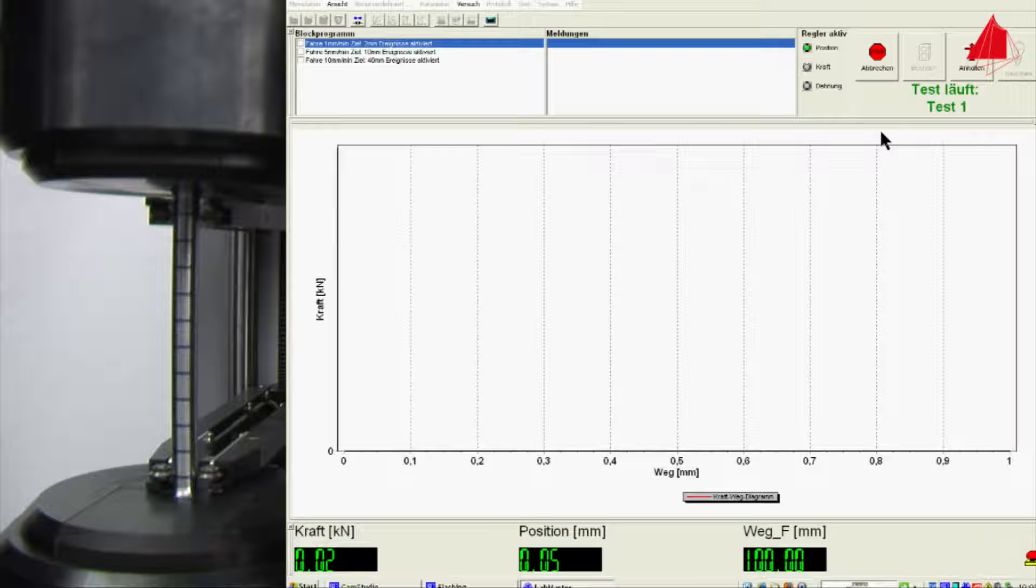During the tensile test, the test piece is slowly and constantly elongated with a standardized speed. The force that the test piece opposes to the imposed elongation is recorded and can be seen at the bottom left hand corner of the computer display.